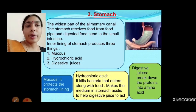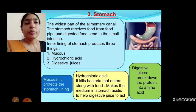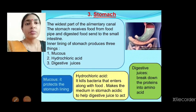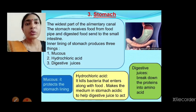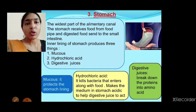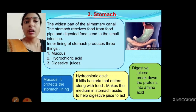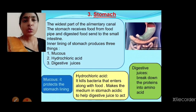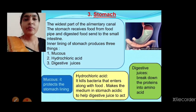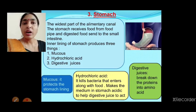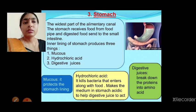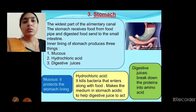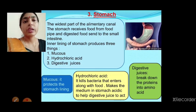Today we learned about the digestion process up to the stomach. In the next class we will learn about digestion in the small intestine, large intestine, and rectum, and how undigested food passes out through the anus. Please read the textbook neatly, follow this video, ask any doubts through the group, and complete the PDF work in your classwork. Thank you, children.